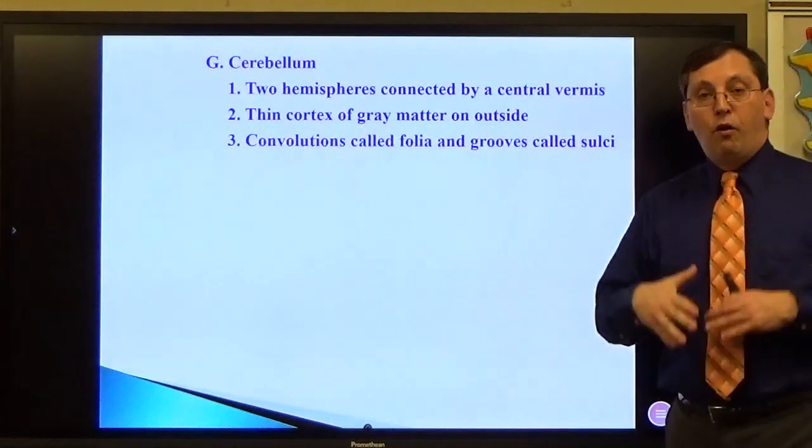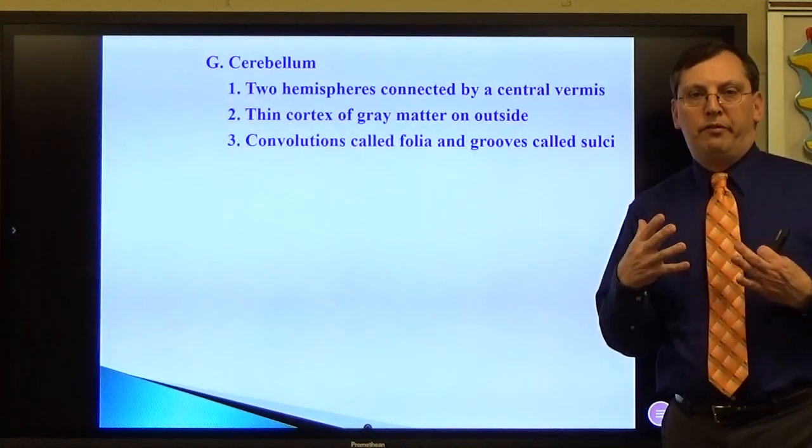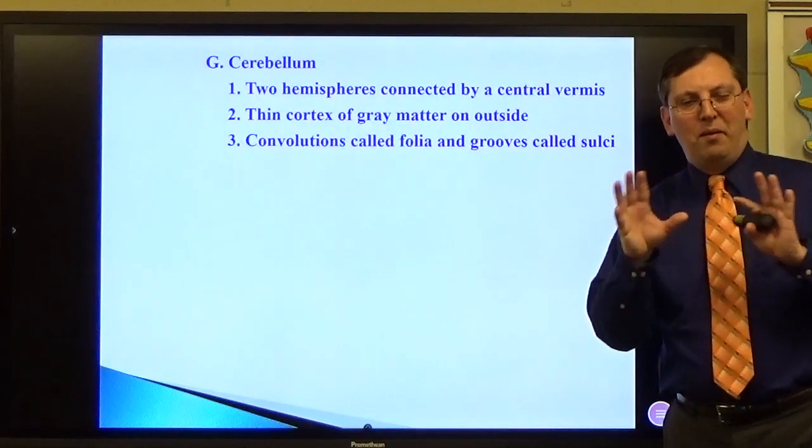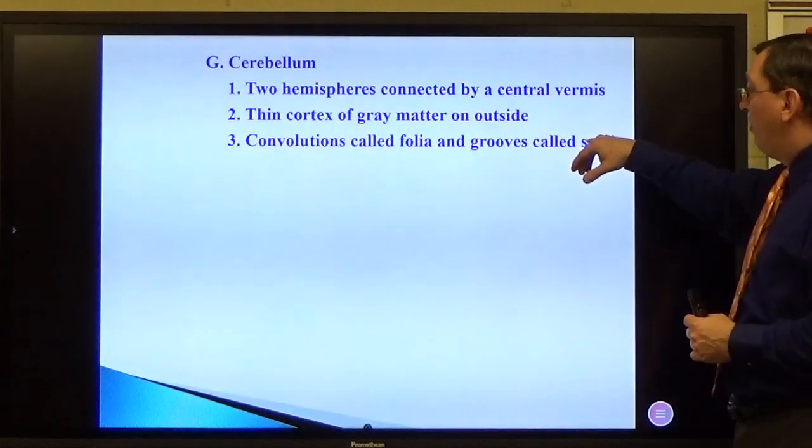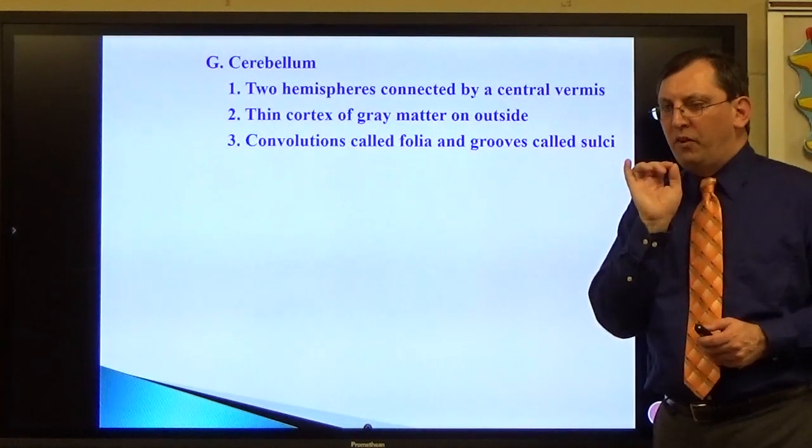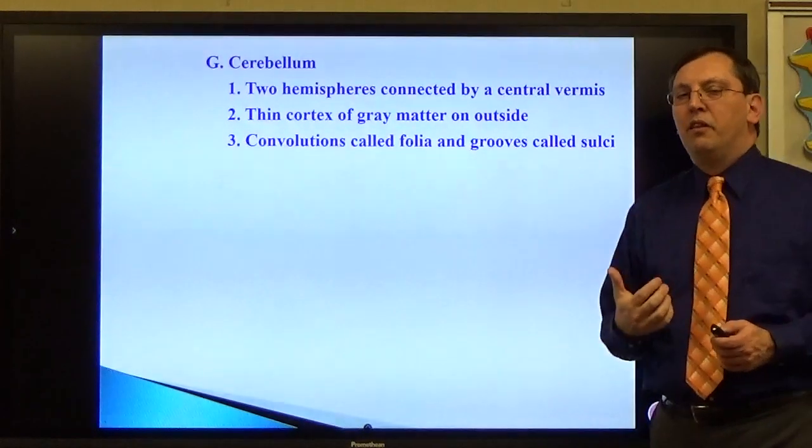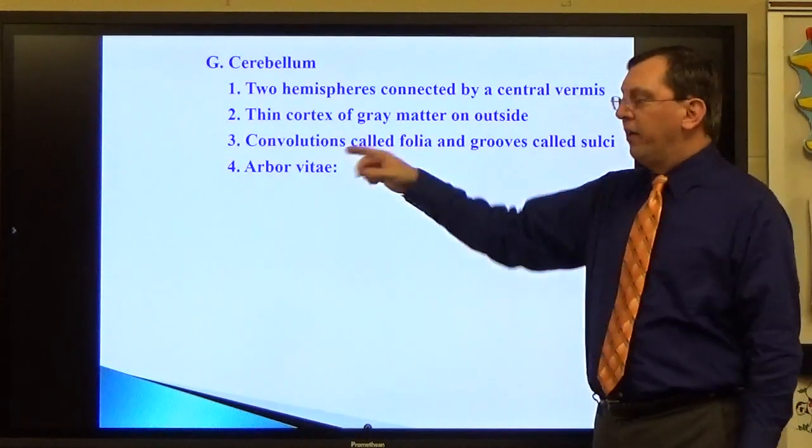The convolutions on the outside are called folia, and there's a reason why we use the word folia. Folia refers to leaves, and we'll get to that concept of why that becomes valid in a second. We still have grooves called sulci, but instead of gyri, we call them folia for a very specific reason. They're not very deep compared, they're not as big as we see the gyri on the cerebrum.